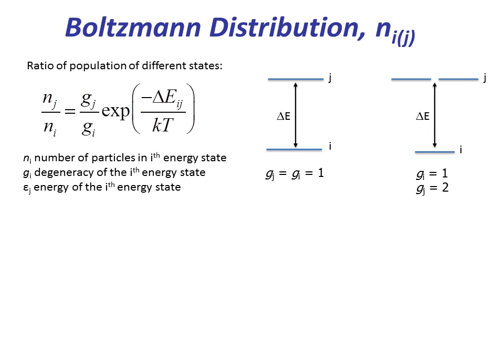Here is an example of an energy state diagram where the Jth state has two degenerate energy levels. Hence, the degeneracy of the Jth state is now two. Boltzmann distribution of electrons informs us about population density of electrons. More the number of electrons present in a given state, more intense will be the transition from that particular state.